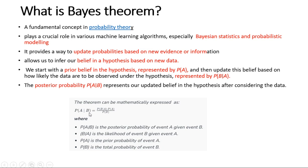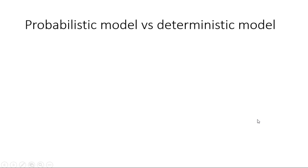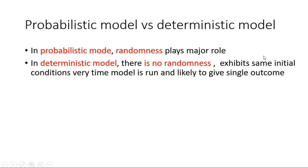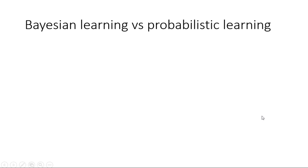There are two kinds of models. Bayesian learning is mainly focused on the probabilistic model, where randomness plays a major role. The opposite is a deterministic model, where there is no randomness — it will exhibit the same initial conditions every time the model is run. In this entire series of Bayesian learning, we are completely focusing on the probabilistic model.